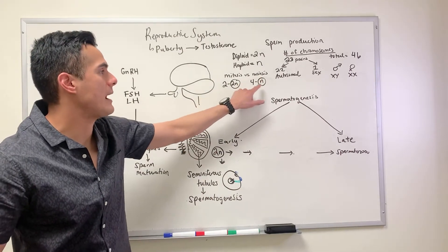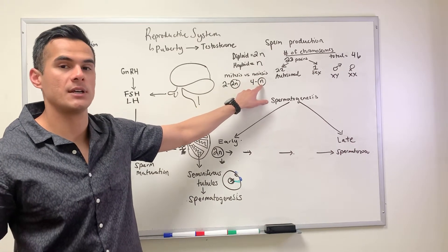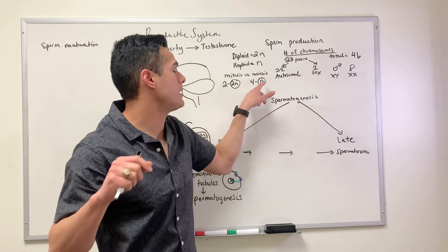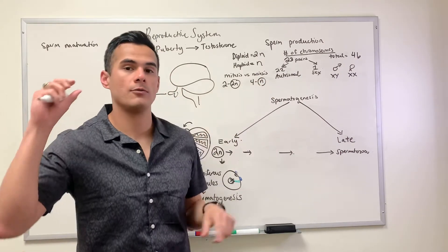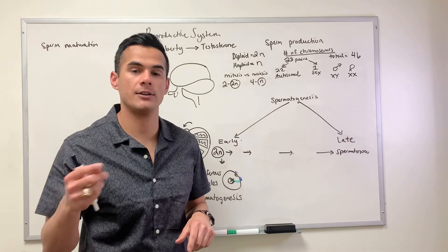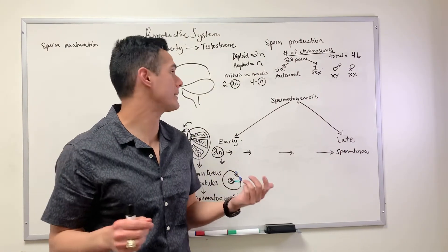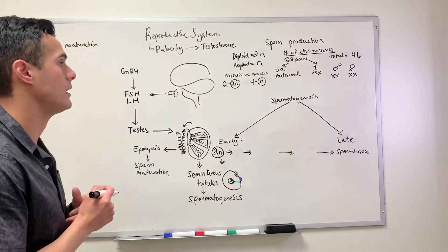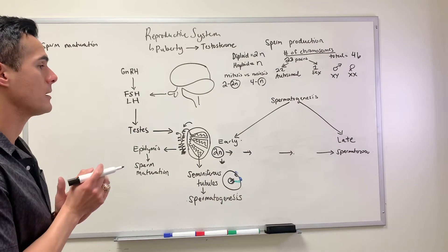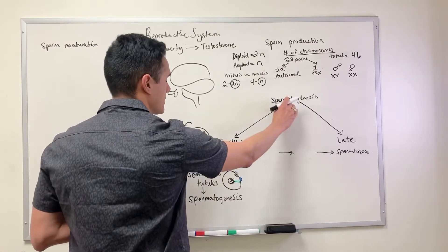The reason that during meiosis we're producing haploid cells is because you get 23 chromosomes from mom and then you get 23 from dad, and when you add those together that's 46 total chromosomes.